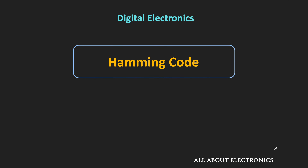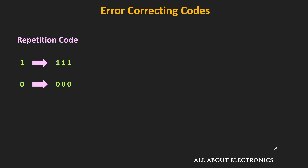We have also seen the very basic type of error correcting code. In the case of the repetition code, the same bit is transmitted multiple times. But this repetition code is not very efficient. For example, with the triple repetition code, for sending one bit of information, two redundant bits are sent along with it. For a one bit of error correction, two extra bits are sent.